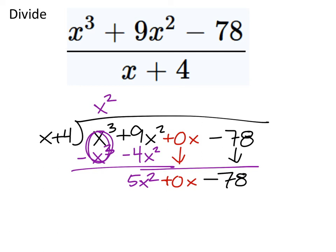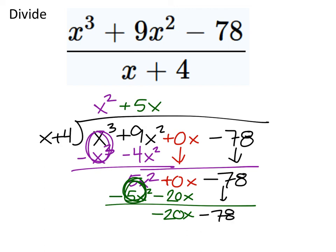Now how many x's go into 5x squareds? Looks like 5x's of them do. 5x times x would give us 5x squared. And this is where that 0x comes in pretty handy. 5x times 4 is 20x's, which we're taking away from that 0x. We use that 0x, and now we've got x. How many times does x go into negative 20x? Negative 20 times. So negative 20 times x is negative 20x. And negative 20 times 4 is negative 80. The x's cancel. Negative 78 plus 80 is 2, and that's going to be my remainder. So x squared plus 5x minus 20, with a remainder of 2.